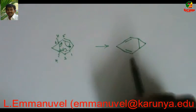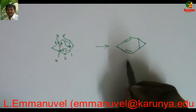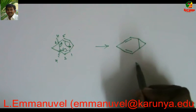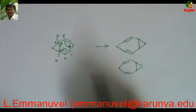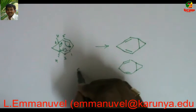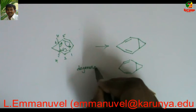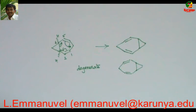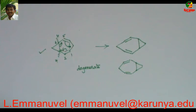If you compare this and this, both are basically same. I can write this like this. So this is the product. This as well as this, both are same. So this is called degenerate. So the first option is giving degenerate cope rearrangement.